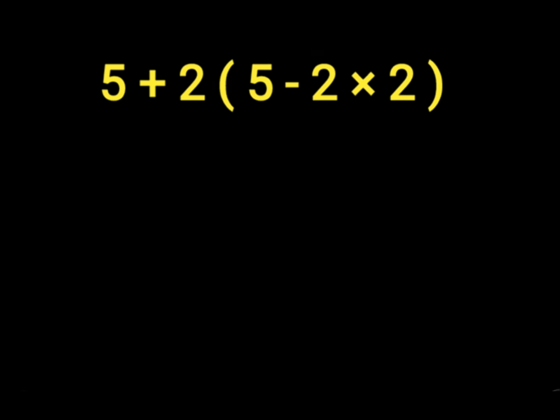First, solve the parenthesis, which is 5 minus 2 times 2. 5 minus 2 gives us 3, then 3 times 2. We'll write this in the parenthesis, then bring down the 5 plus 2.